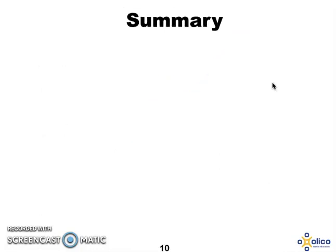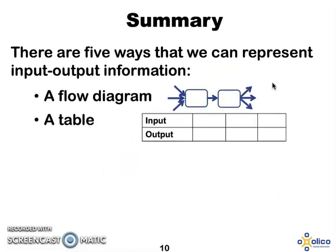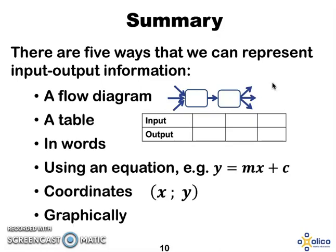So let's summarize what we've learned. Five ways. A flow diagram. A table. Words. An equation. Coordinates. And last but not least, a graph. I hope you've learned something interesting here and enjoyed it.